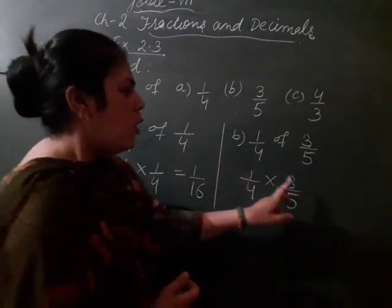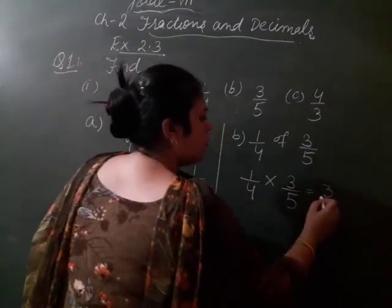Numerator, numerator multiply hoga: 1 times 3 is 3, 4 times 5 is 20.